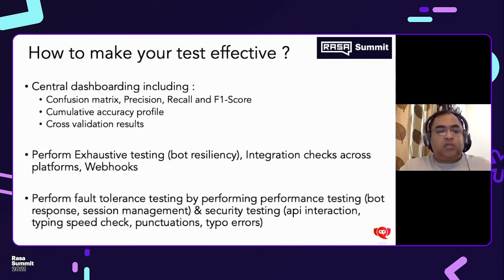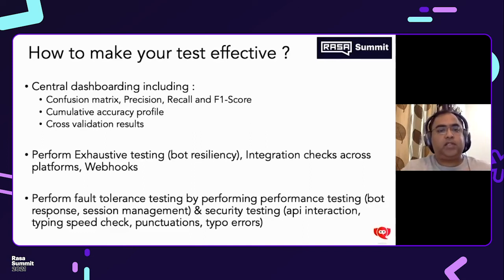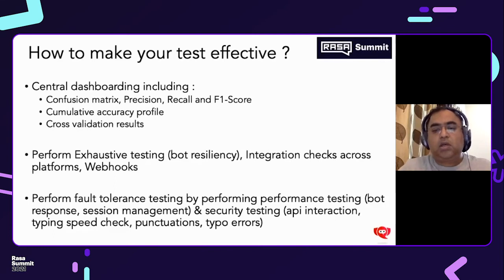One important thing is to check fault tolerance through performance testing — we need to check how the bot responds against load. What we do in QA is push load onto our server and then start talking with our bot to understand how it behaves under extreme load conditions, and obviously how the session is being managed, because we have seen that in most high-load conditions sessions get overlapped and data gets confused.